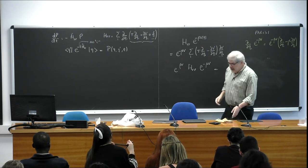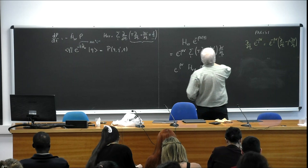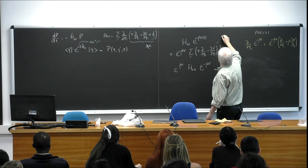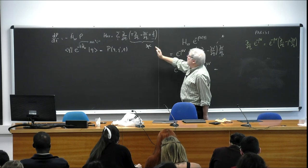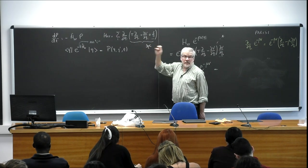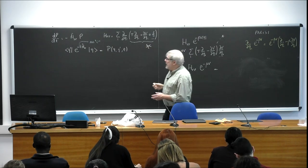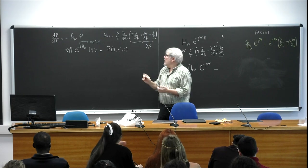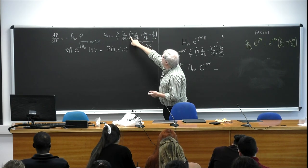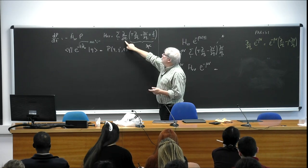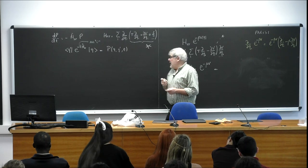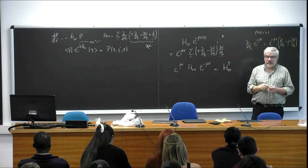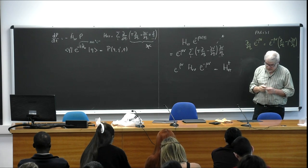Comparing this one — which is the Fokker-Planck — with this one: imagine I transpose this. Remember that transposing is like integrating by parts; it changes the sign of the derivatives and changes the order of terms. When I transpose, the sign changes and terms rearrange, and what I get is exactly this — as an operator.